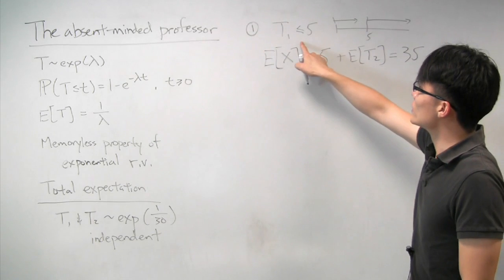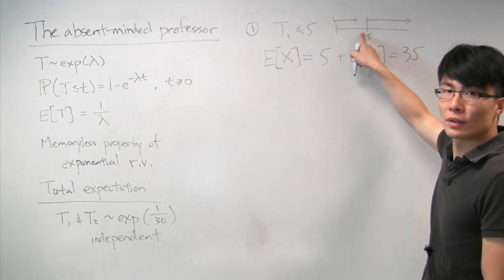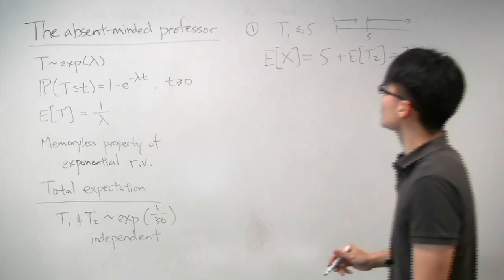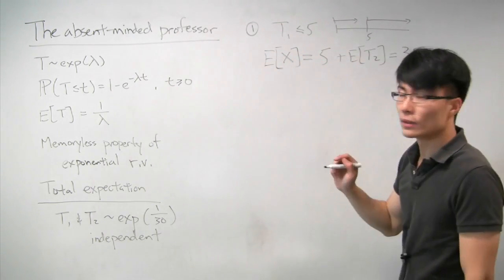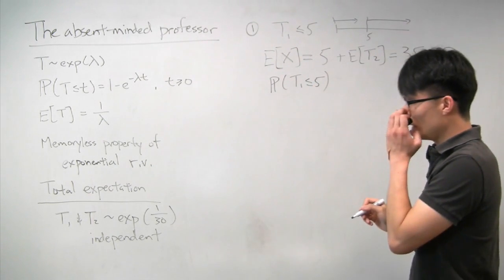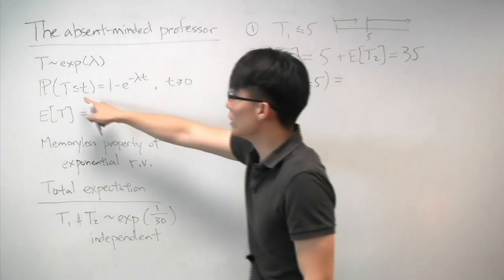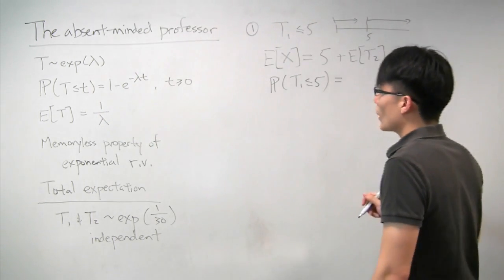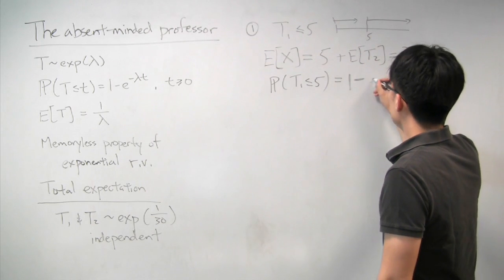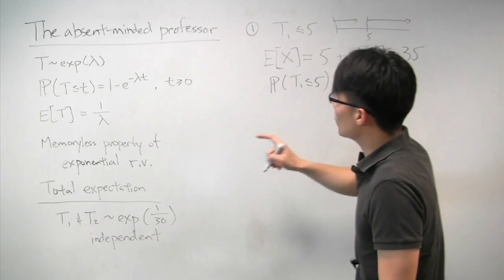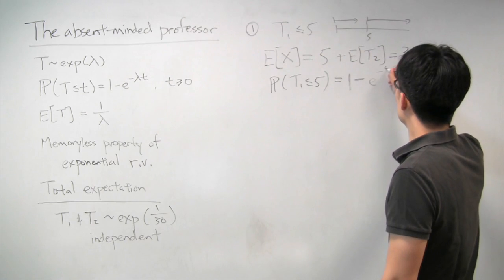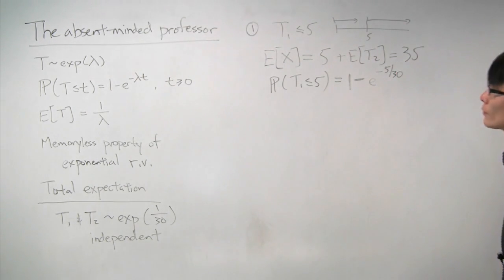So the first student doesn't take very long, and we just get the 5-minute buffer plus however long the second student takes, which on average is 30 minutes. The probability of this scenario is the probability that the first student takes less than 5 minutes, which using the CDF gives us 1 minus e to the minus 5 over 30.